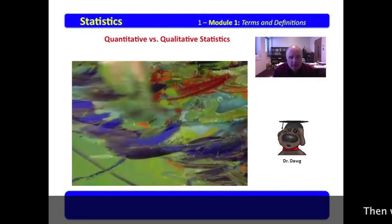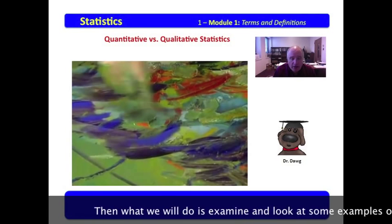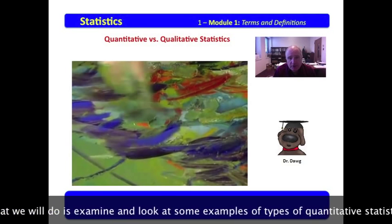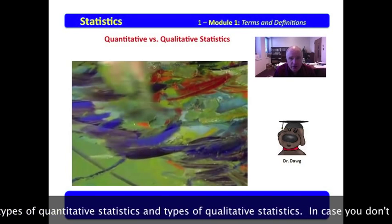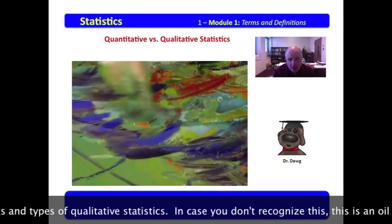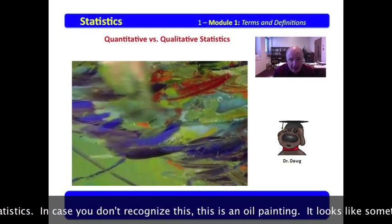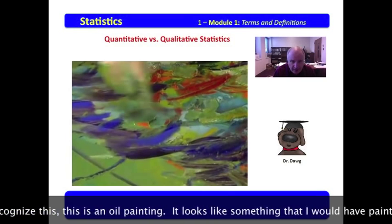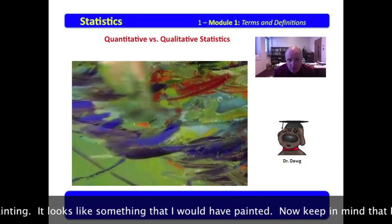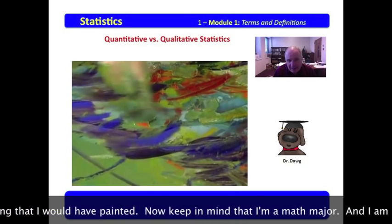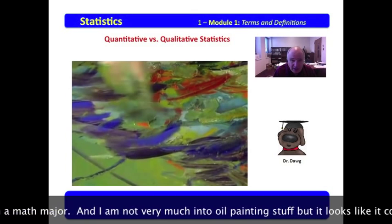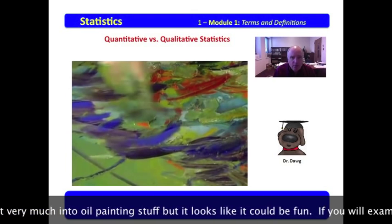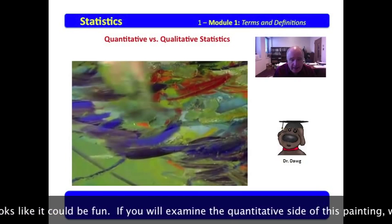Now what we will do is examine some examples of types of quantitative statistics and types of qualitative statistics. In case you don't recognize this, this is an oil painting. It looks like something that I would have painted. Now keep in mind that I'm a math major, and I'm not very much into oil painting stuff, but it looks like it could be fun.